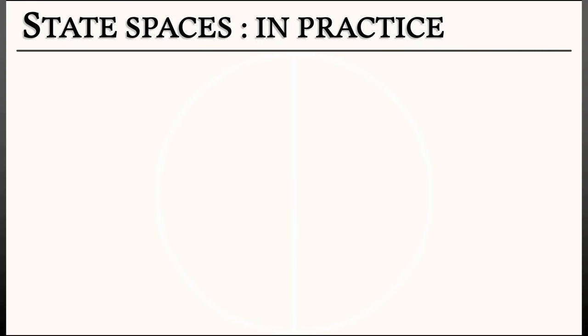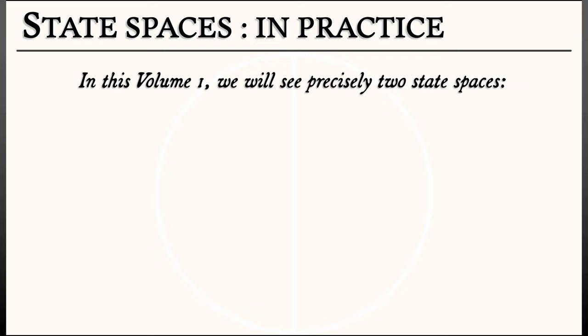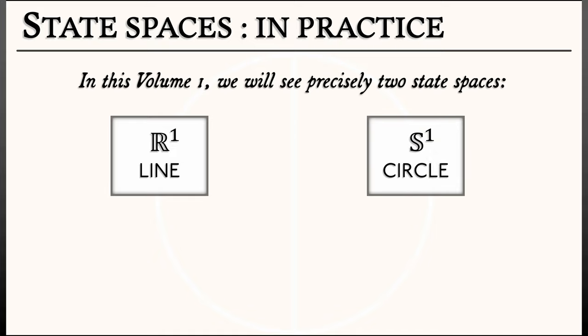But in practice, in this volume, we're really only going to see two state spaces. The real line, often denoted R1, and then the circle, denoted S1. We might see these or subsets of these, and that's really it. These are the two simplest one-dimensional spaces that there are.